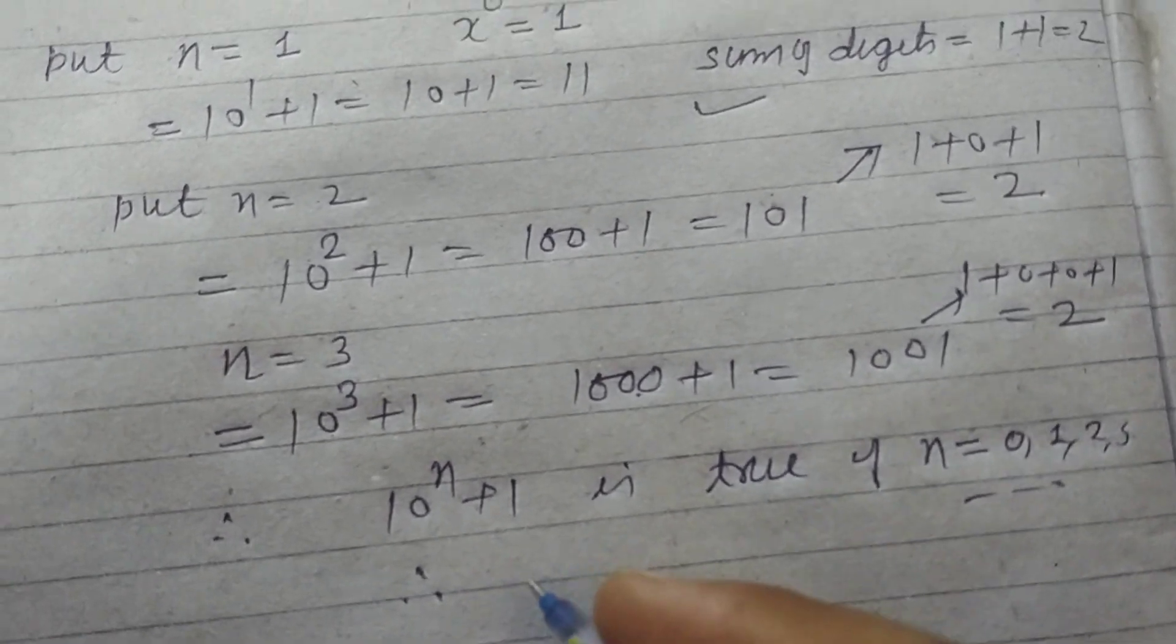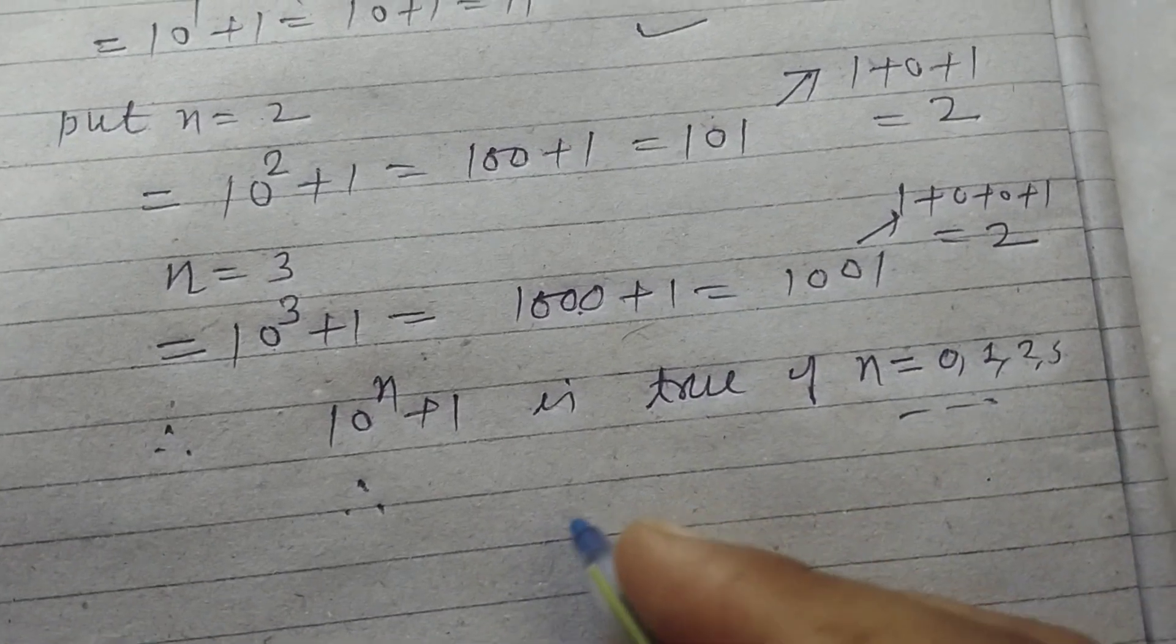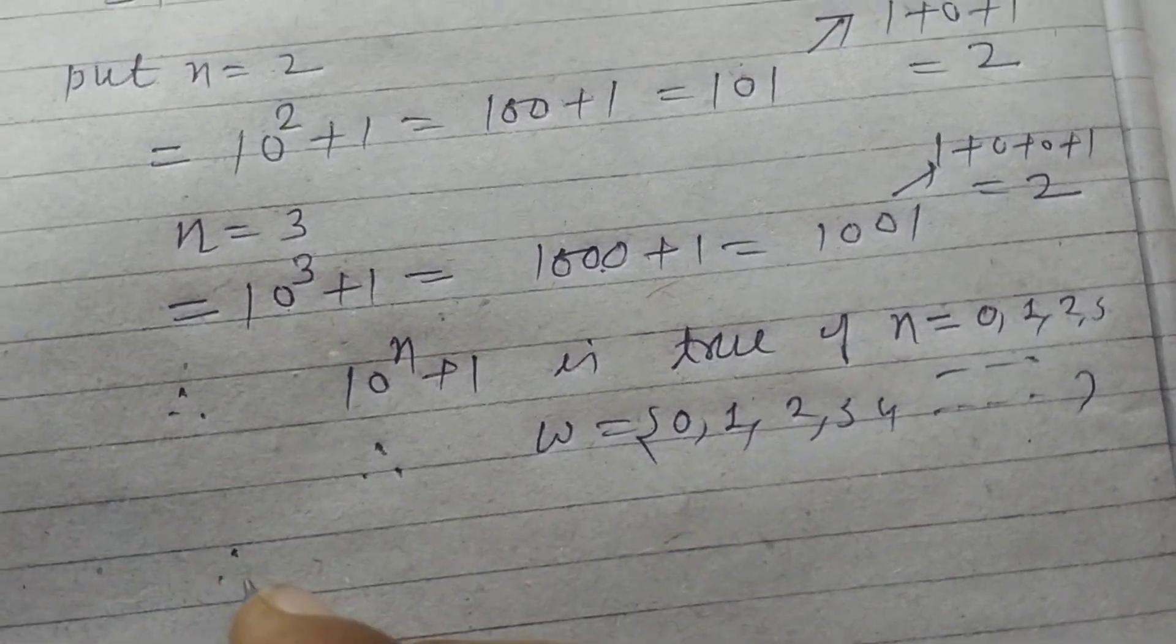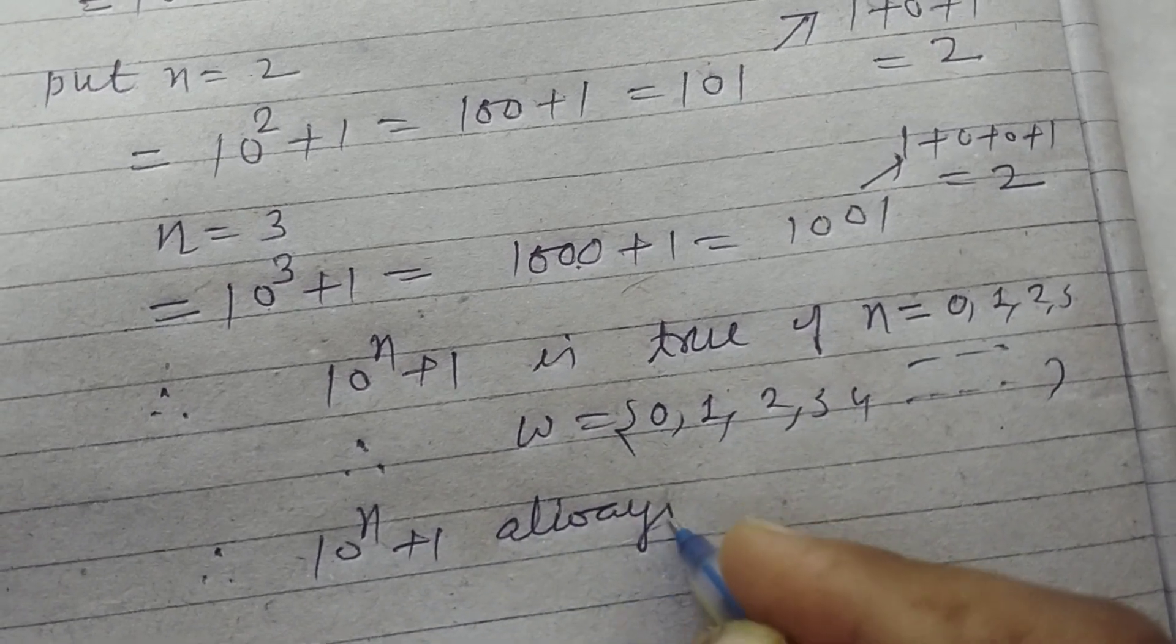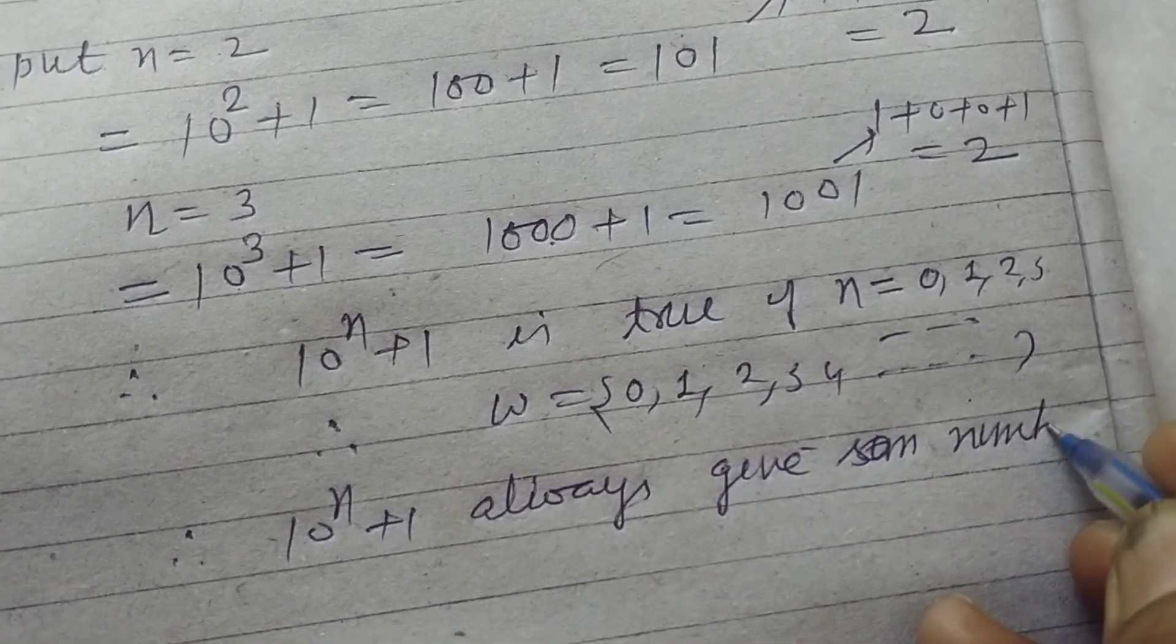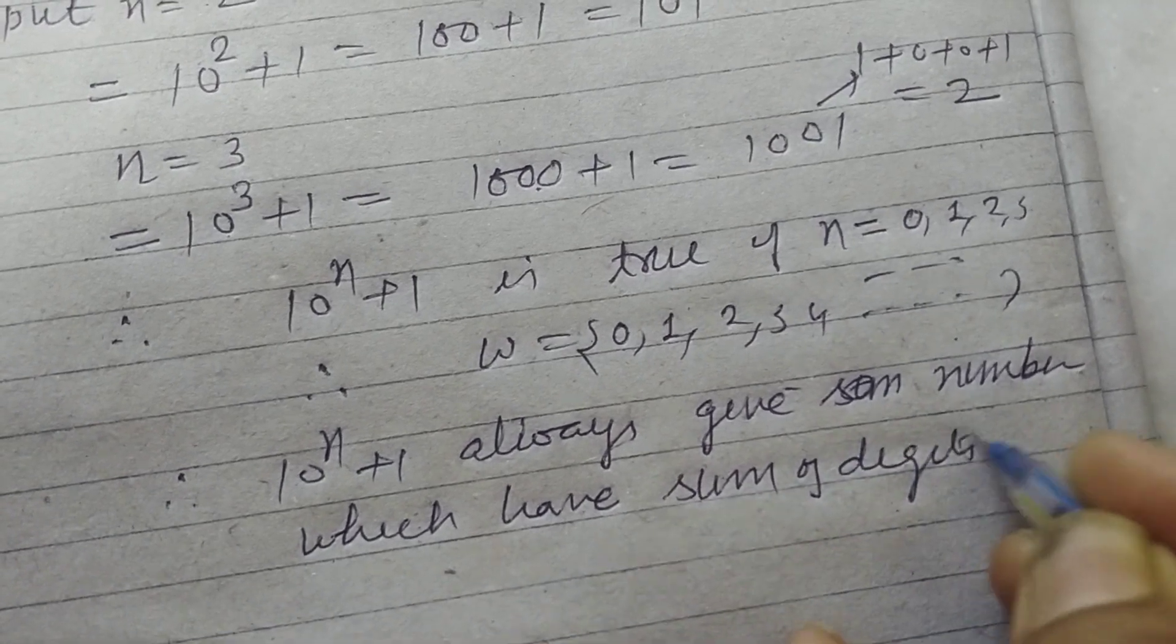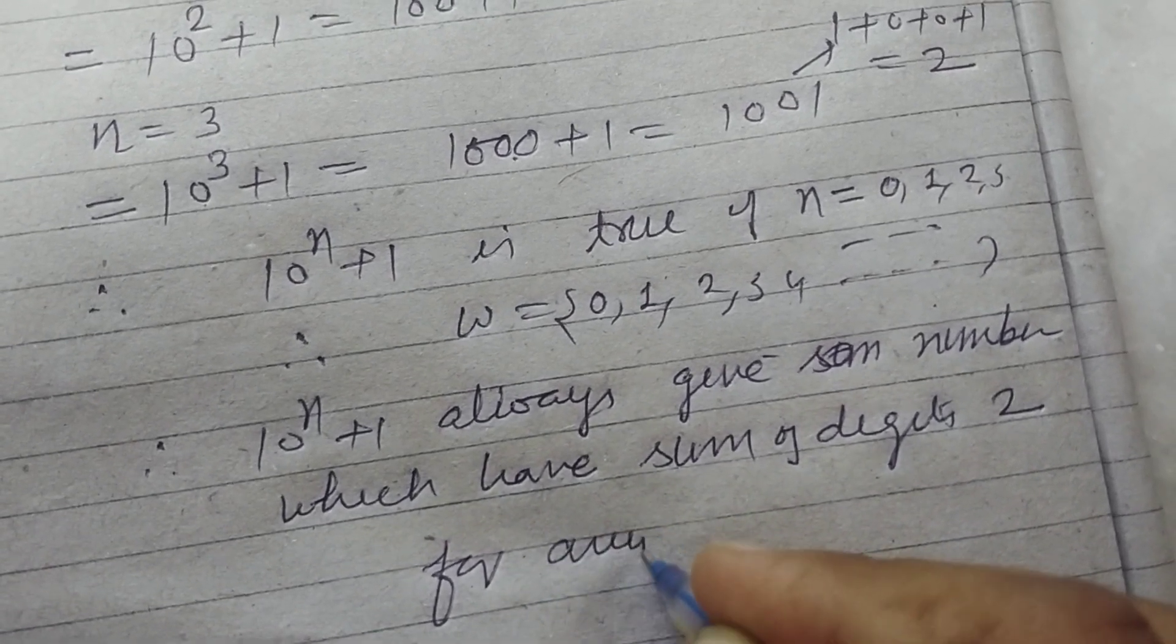Therefore, the answer to this question is for any whole number. The set 0, 1, 2, 3, 4, 5, etc. are whole numbers. Therefore, 10^n + 1 always gives a number which has a sum of digits equal to 2 for any whole number n.